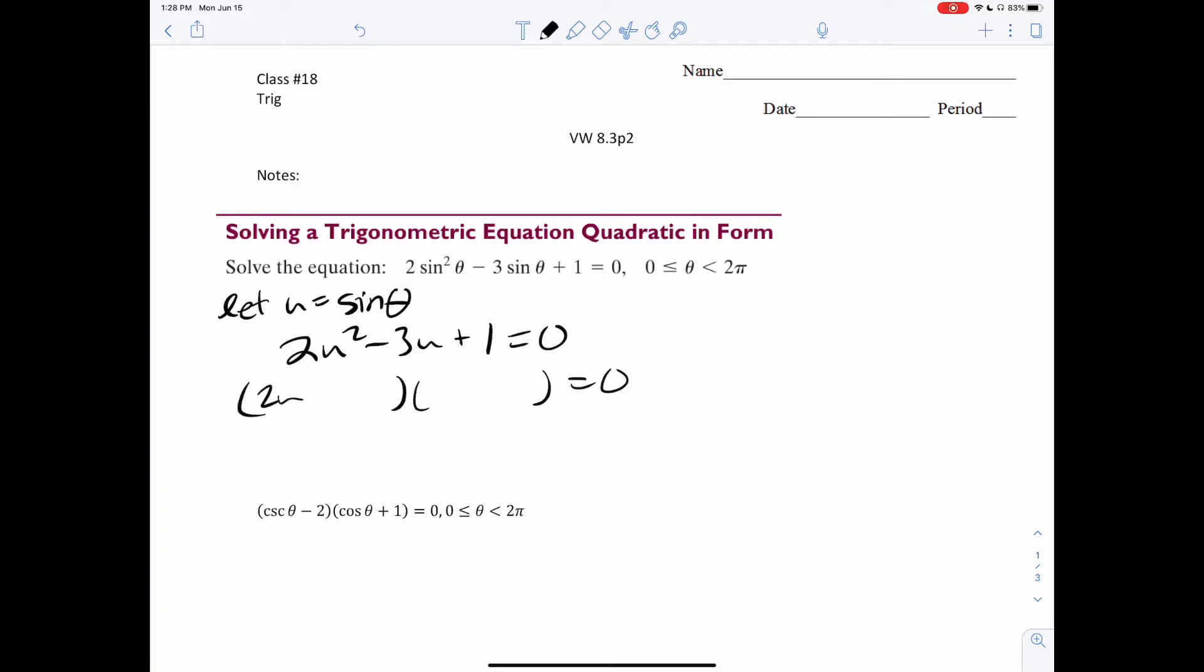So I have 2u, u, 1, 1, minus, minus. And there we have it. u is equal to 1 half or 1. Plug it back in.